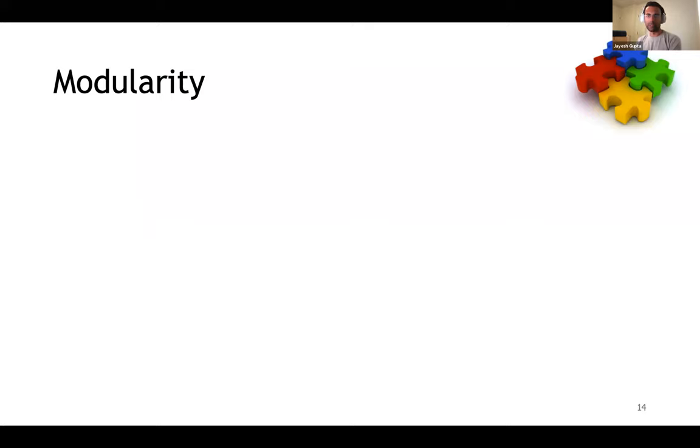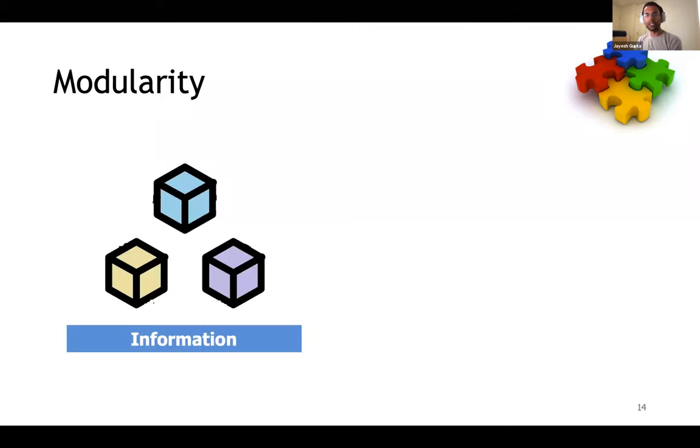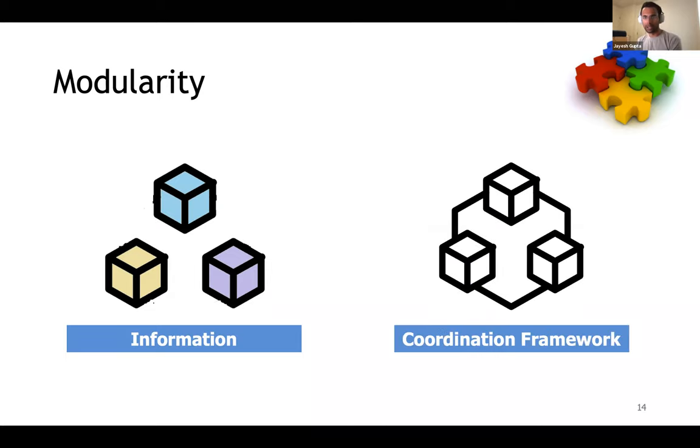One way designers deal with the complexity of systems is with principles of modularity. A modular system is defined by two major ideas: information encapsulation or abstraction, where a complex system can be broken into smaller independent pieces which only deal with part of the problem. And secondly, a framework for integrated function. Given the smaller pieces which are relatively independent, we still need to coordinate them together to perform the task together. Modular design allows better integration of human domain knowledge compared to completely black box designs.